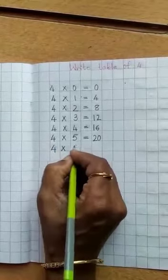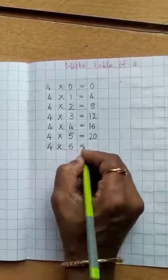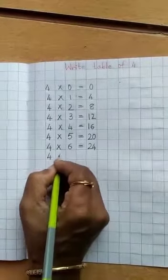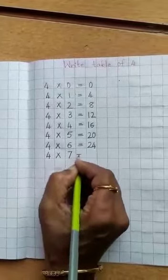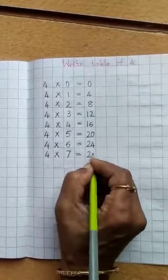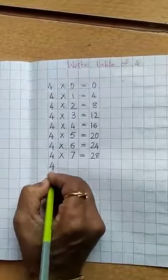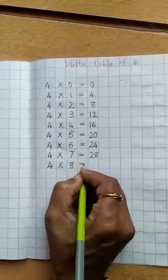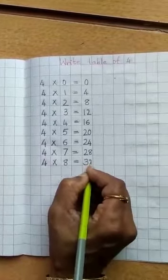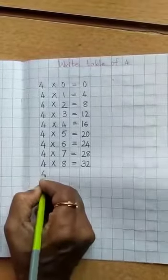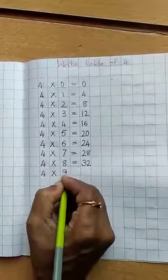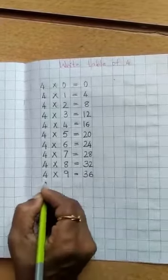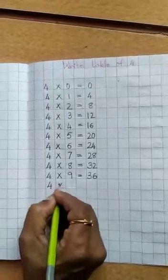4 6's are 24. 4 7's are 28. 4 8's are 32. 4 9's are 36. 4 10's are 40.